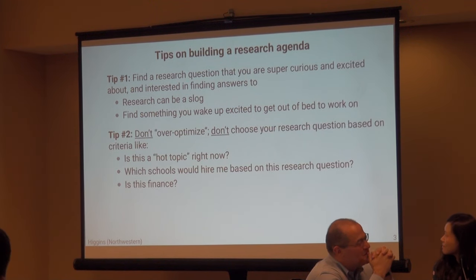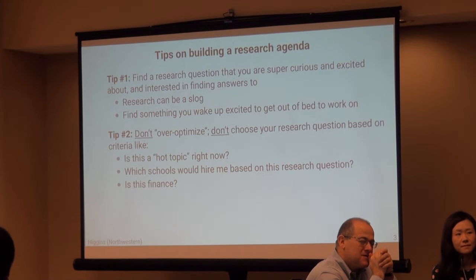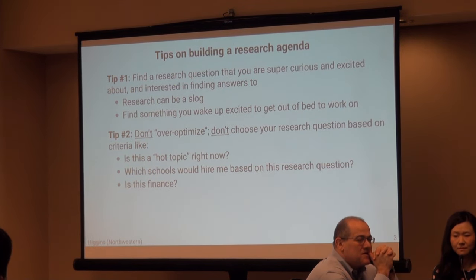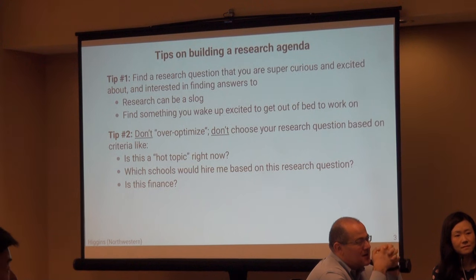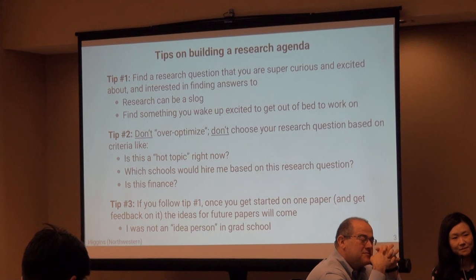My second tip is that sometimes PhD students try to over-optimize and really pick their research agenda based on what they think will play best in the profession. My advice is to not over-optimize and not choose your research question based on criteria like: is this a hot topic right now? Which schools would hire me based on this research question? And finally — some may disagree — is this finance? I think that is not a useful guiding question. You need an important underlying economic question, but thinking whether it's a traditional question within finance is not the right criteria to base your agenda on.